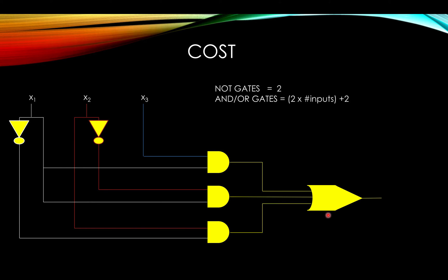So when determining the cost, we could use our diagram. We know that NOT gates cost us 2. In this case, we have two of them, so they each cost us 2. AND/OR gates cost us 2 times the number of inputs plus 2. In this case, we have three identical AND gates, each having two inputs, so 2 times 2 plus 2 equals 6 for each AND gate.